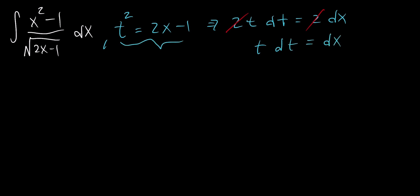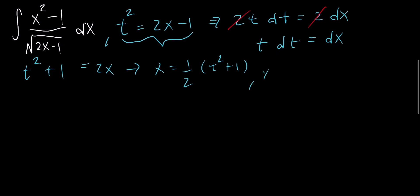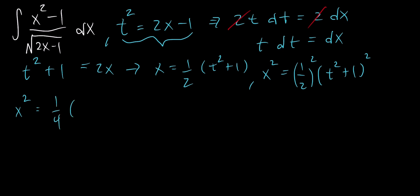Now we can manipulate this equation. We have t squared plus 1 equals 2x, which means that x equals one half times t squared plus 1. Since we're interested in x squared, we square both sides, giving us x squared equals one fourth times t squared plus 1 squared.